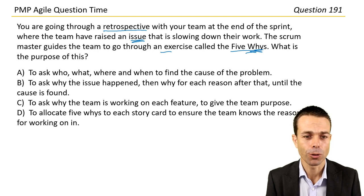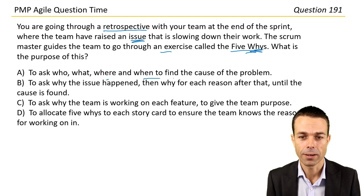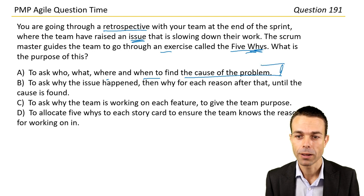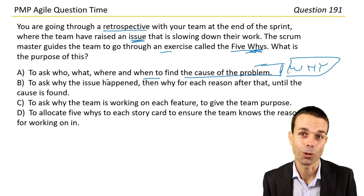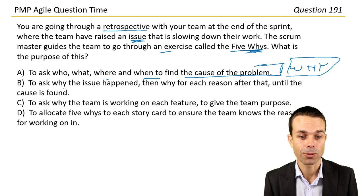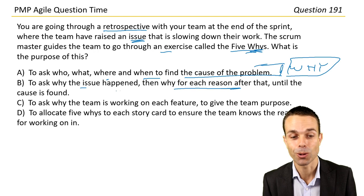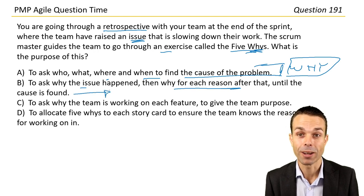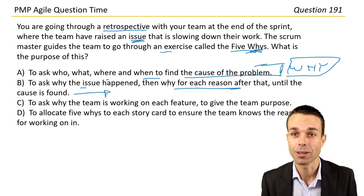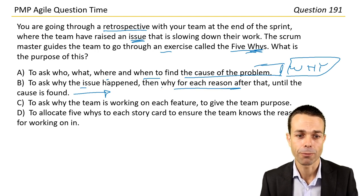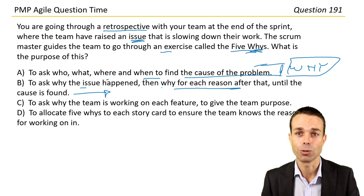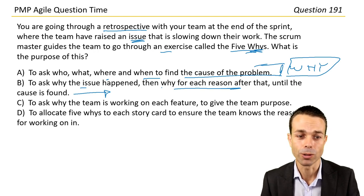This is a really good way for dealing with issues that come up in your retrospective. Is it to ask who, what, where, and when to find the cause of the problem? No — we're asking why multiple times until we get to the root cause. So: ask why the issue happened, then why for each reason after that until the cause is found. That's the one. This is from the Lean method, or the Toyota production system, which is where a lot of Agile methods came from. They use the Five Whys to problem-solve and find the root cause.